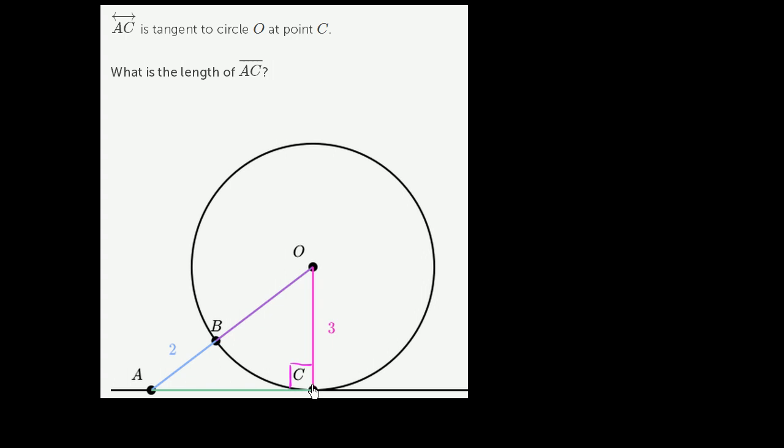If we know two of its sides, we can use the Pythagorean theorem to figure out the third. We clearly know OC. Now OA, we don't know the entire side. They only give us that AB is equal to two.